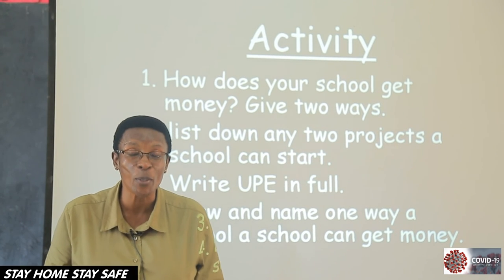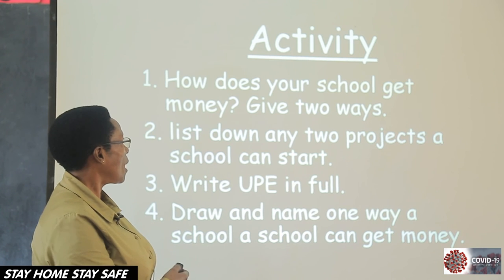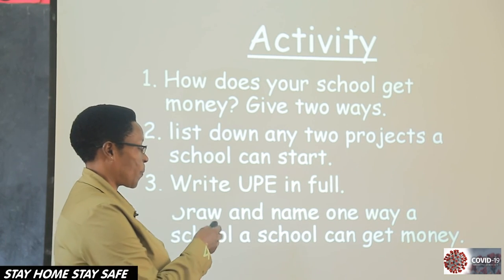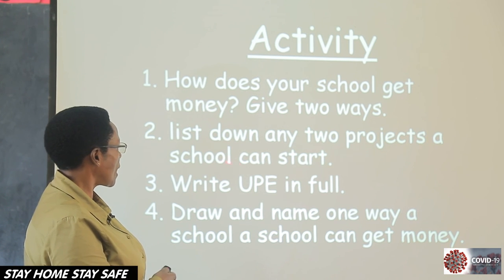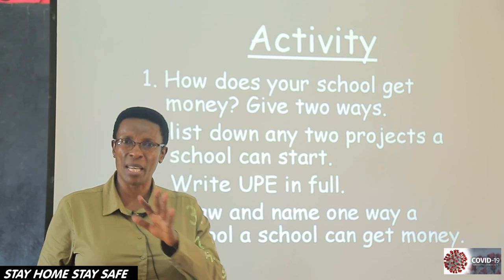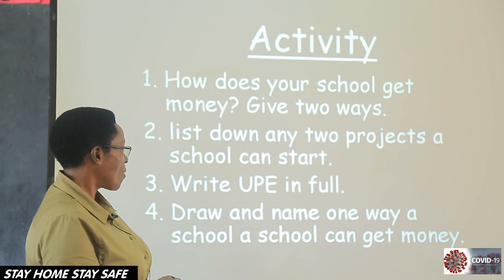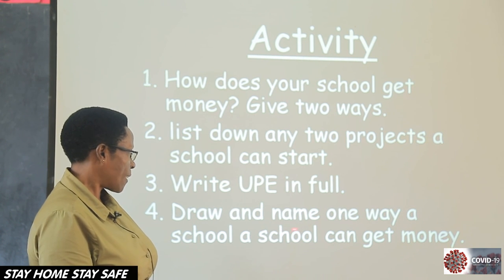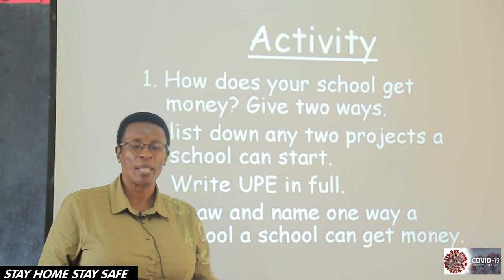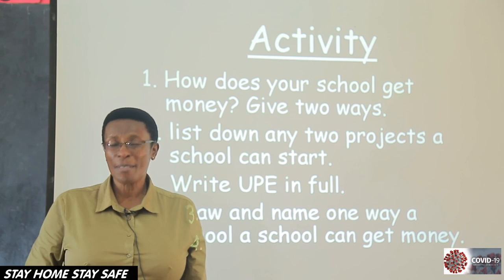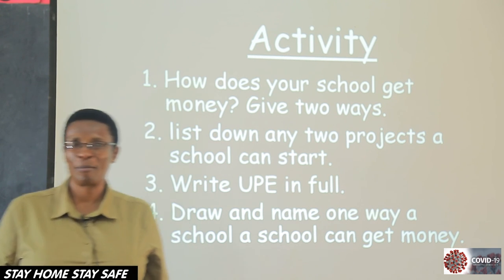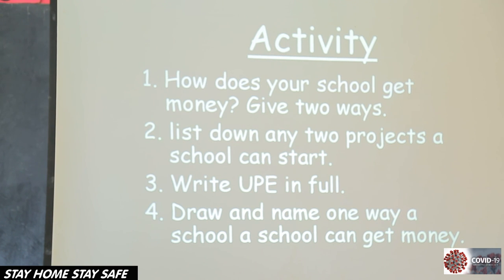Now here is the activity for you to answer after learning. Number one: how does your school get money? Give two ways. List down any two projects a school can start. Then write U-P-E in full. And name one way a school can get money. Thank you very much. We meet next time when you have answered these questions very well. I hope you remember. We meet in another lesson. Thank you.